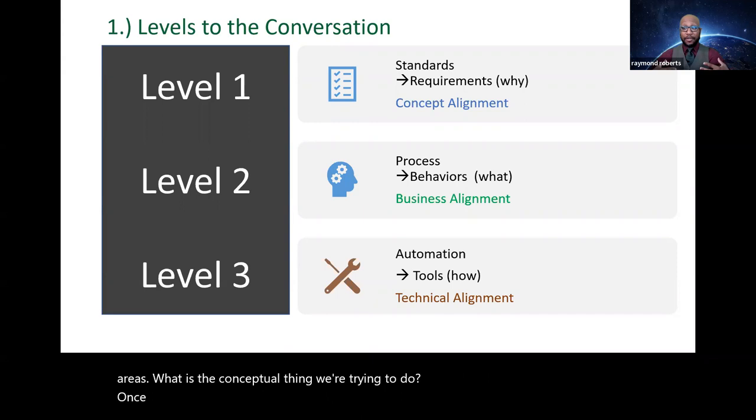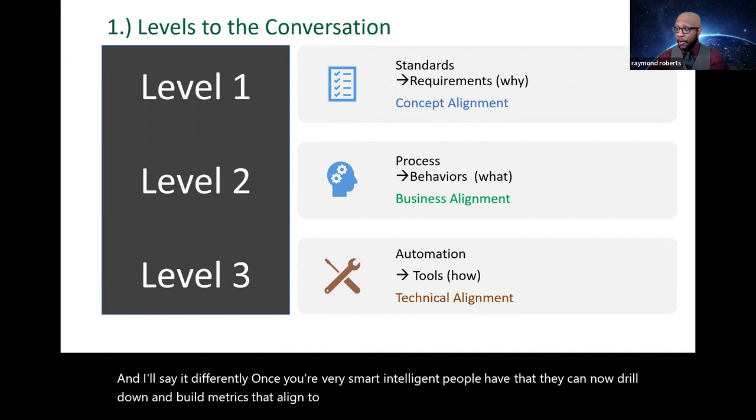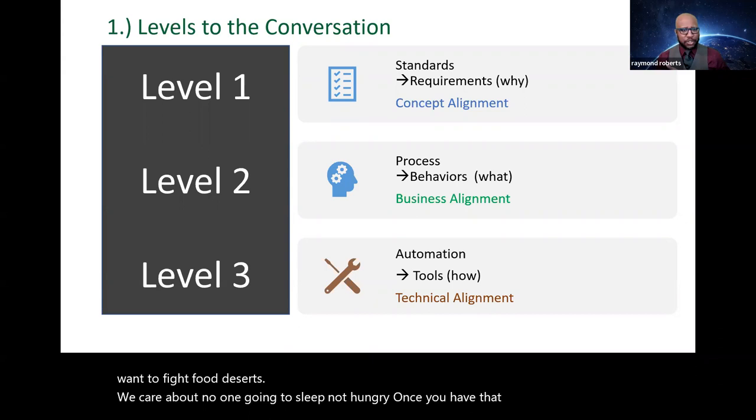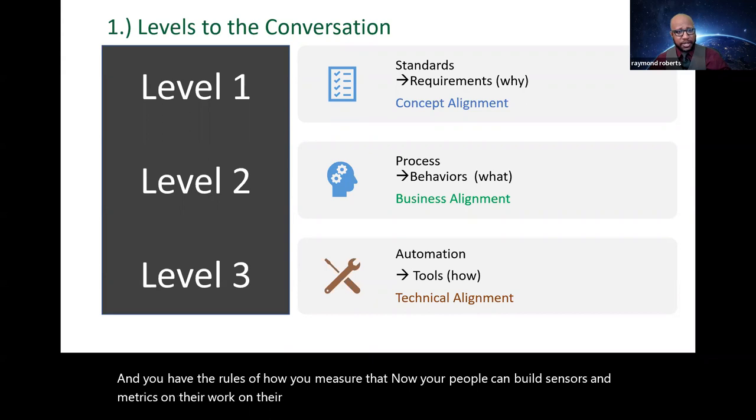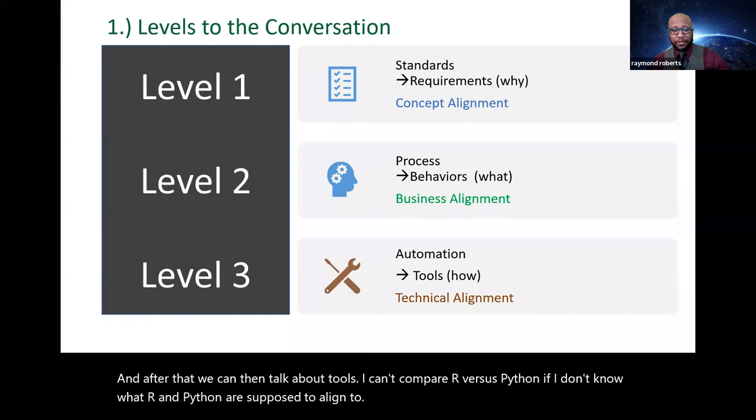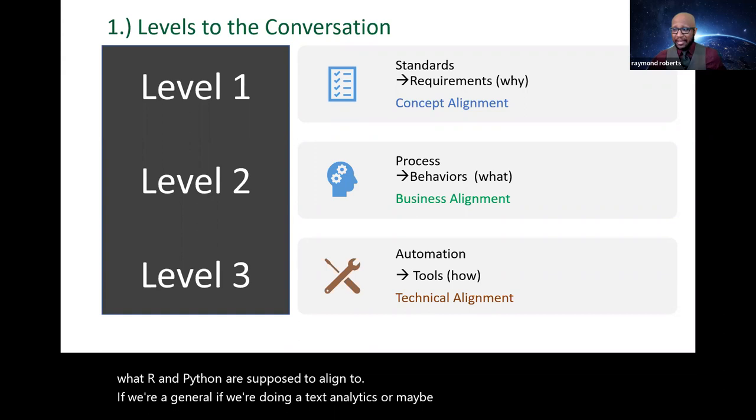We care about ending world hunger. We care about bringing Wi-Fi connectivity to rural areas. What is the conceptual thing we're trying to do? Once I have that, and I'll say it differently, once your very smart, intelligent people have that, they can now drill down and build metrics that align to that. So let's say, for example, you're like, hey, we want to fight food deserts. We care about no one going to sleep hungry. Once you have that conceptual marching order, and you have the rules of how you measure that. Now your people can build sensors and metrics on their work, on their machines, on their tools, to kind of measure how well we're doing there. And after that, we can then talk about tools. I can't compare R versus Python if I don't know what R and Python are supposed to align to.